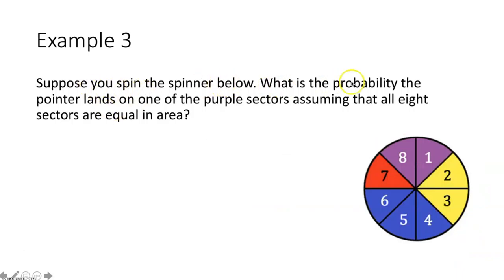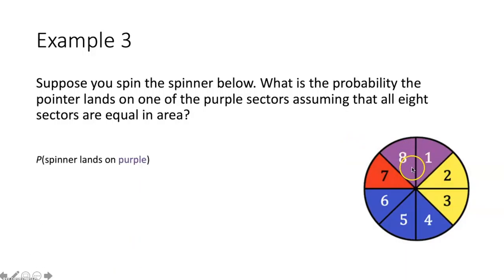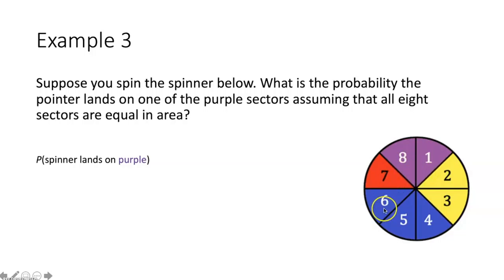Example three: suppose you spin the spinner below. What is the probability the pointer lands on one of the purple sectors, assuming all eight sectors are equal in area? We use the area probability ratio — area of the purple sector over area of the entire circle. Since no radius is given, we can use the central angles instead. Because all eight sectors are equal in area, all their central angles must be equal as well.